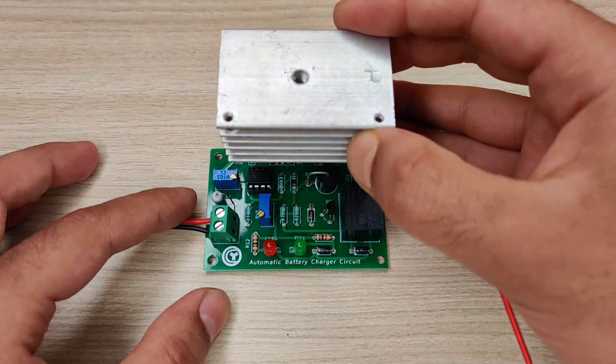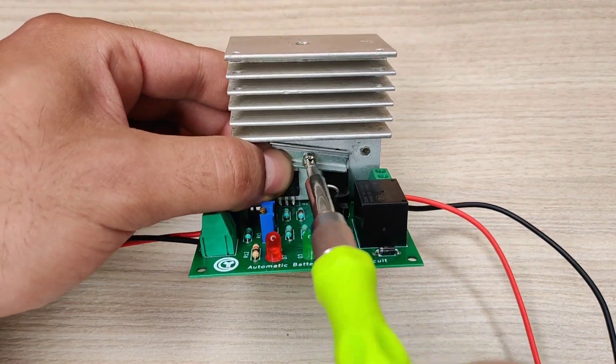Use a heatsink for good heat dissipation of bypass transistor and LM317 regulator.